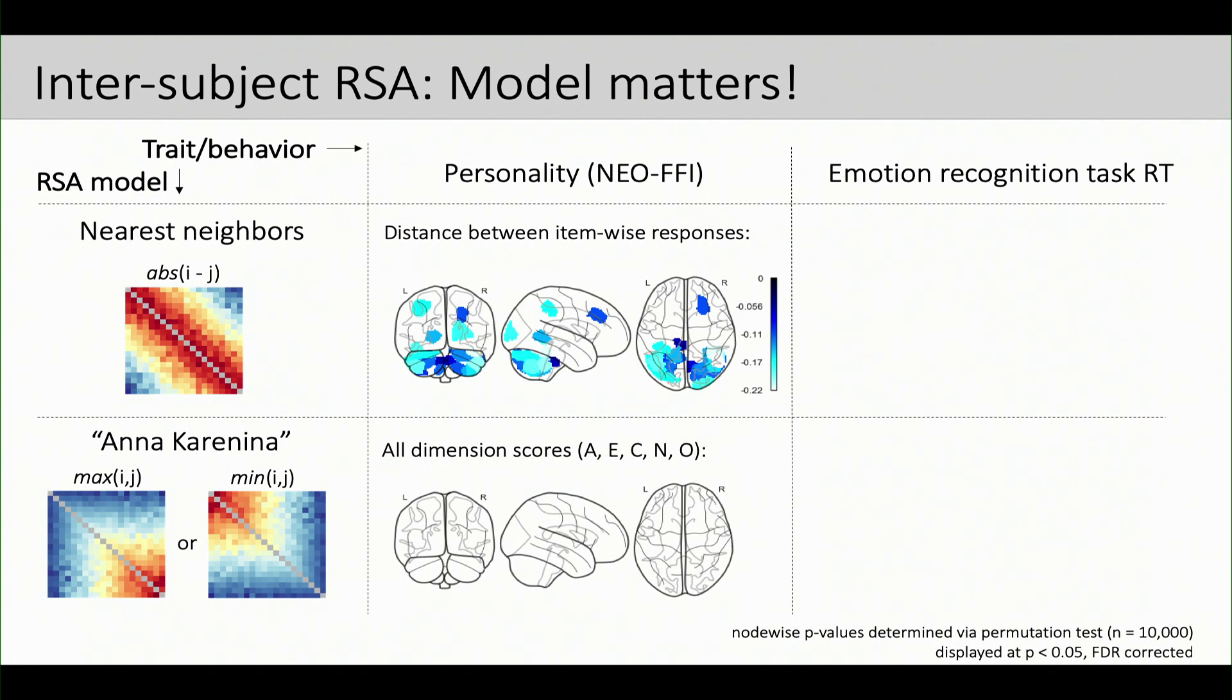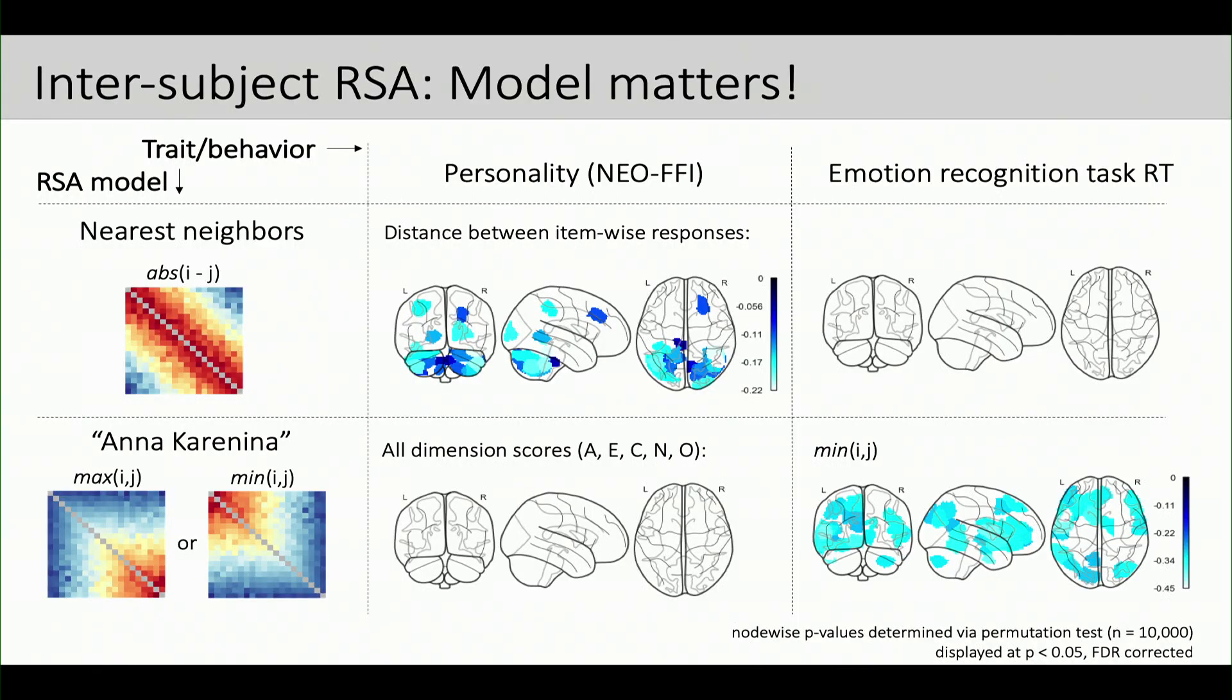However, if we turn to this behavioral measure, so this is another measure that we tried which was reaction time in an emotion recognition task, so perhaps indexing some measure of social processing. If we model this as a nearest neighbor similarity problem, we don't see any nodes that show a significant relationship. However, if we model this in the Anna Karenina framework, specifically this time looking at subjects that have faster reaction times. So these are the nodes in which two subjects that both have fast reaction times will look more similar, whereas subjects with slower reaction times are looking more different both from one another and from the fast responders. And so you can see that a lot of the brain now pops out as showing significant representational similarity.